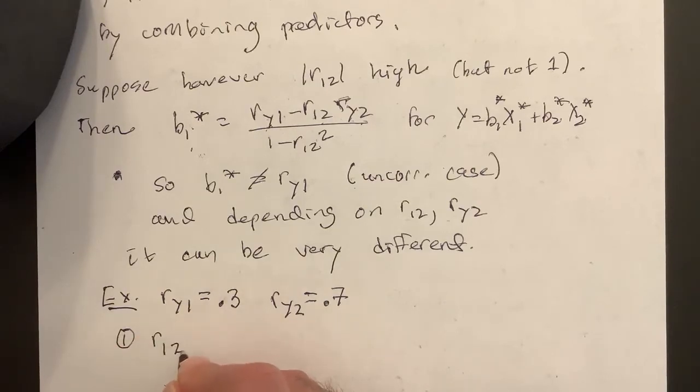So R12, say R12, I'll just look at some different examples, is 0. Well then we know B1 star is what? Right, 0.3, right? When they're uncorrelated, it's just the coefficient of simple correlation. Then I have an SLR model, and it's just that.